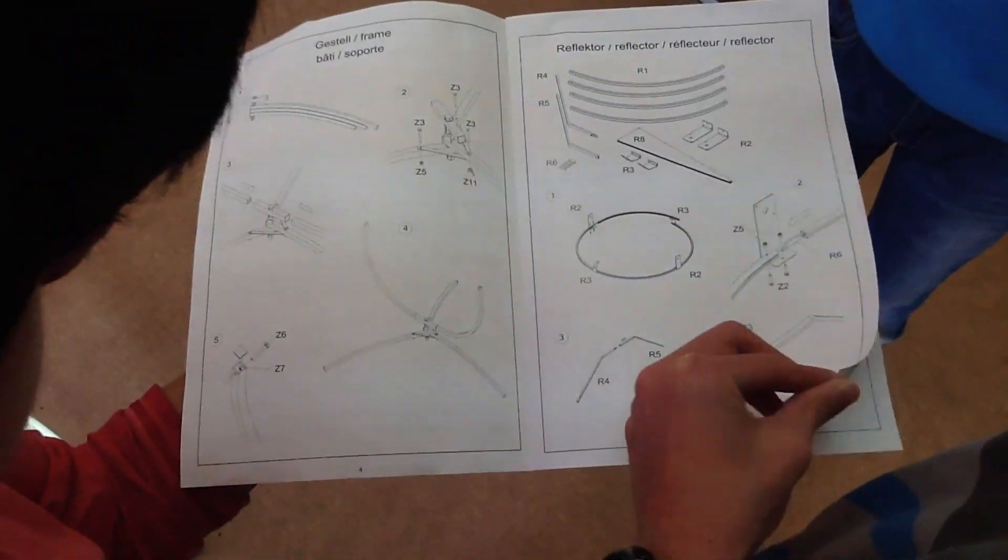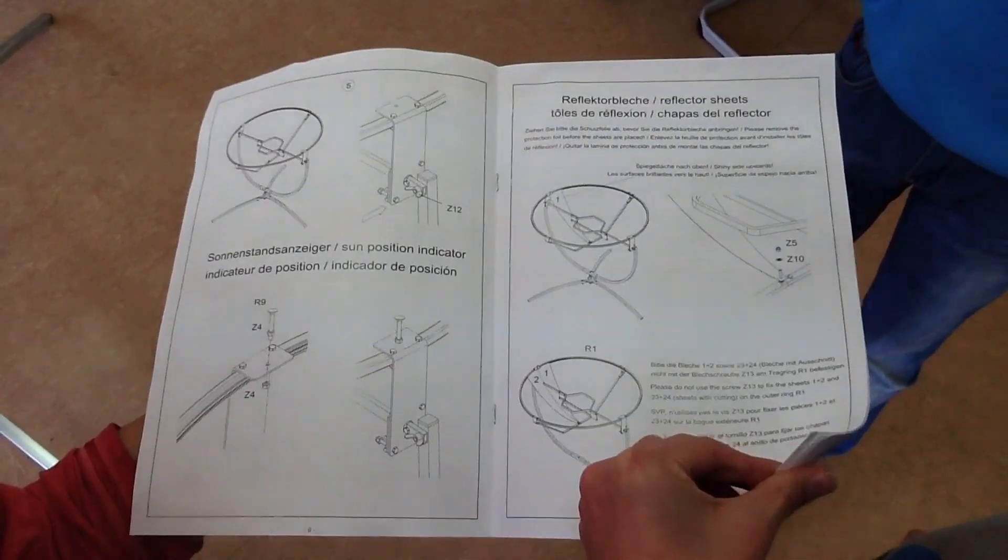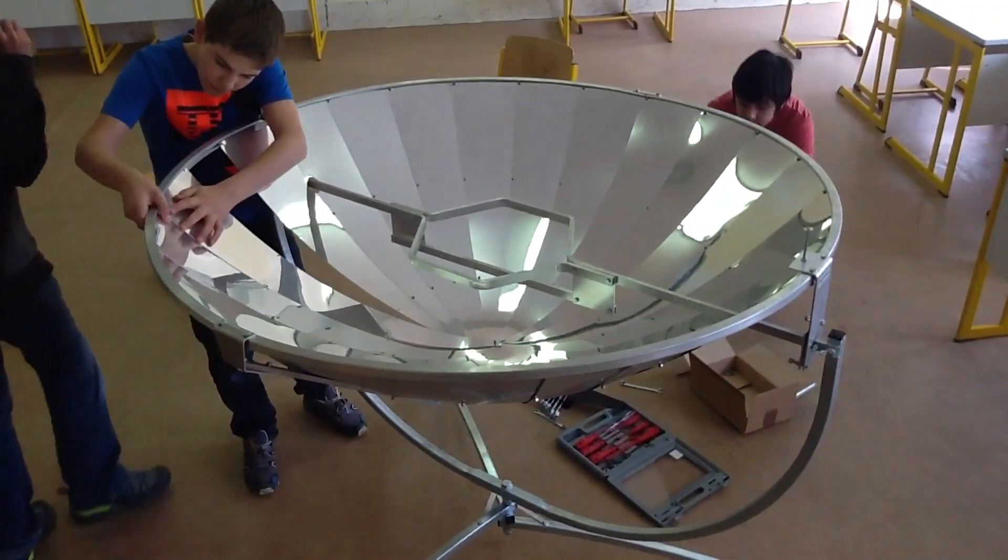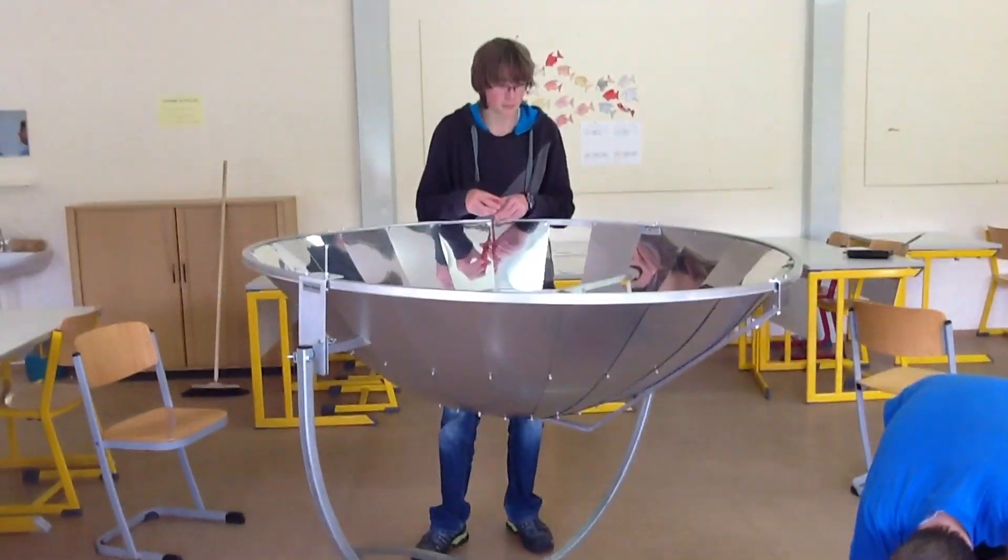As you can see, the assembly of the solar cooker is easily done in three simple steps. Here the students are finishing the parabolic mirror.